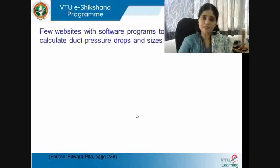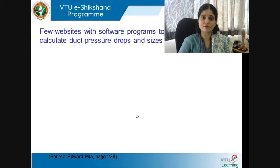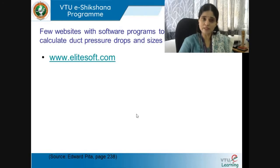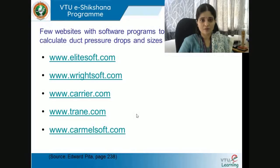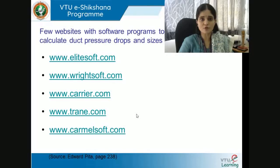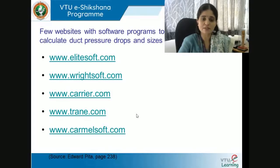There are several websites with software programs to calculate duct pressure drops and sizes, sourced from Edward Peter's book: Elitesoft.com, Ritesoft.com, Carrier.com, Trane.com, and Karmelsoft.com. These are air conditioning providers and software tools where you enter values and the software proposes duct pressure drops and resulting duct sizes. Please check them out as an exercise.